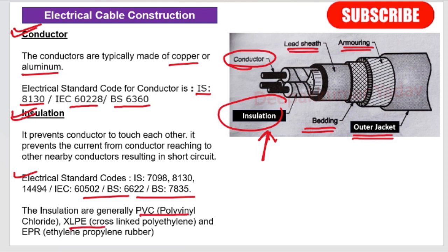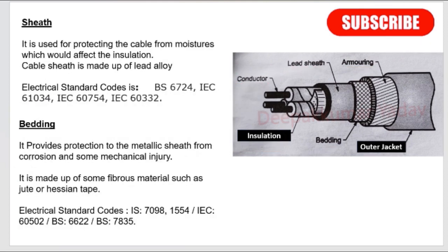The insulation materials are generally PVC (polyvinyl chloride), XLPE (cross-linked polyethylene), and EPR (ethylene propylene rubber). After the insulation, the next protective layer is the sheath. It is used to protect the cable from moisture, which would affect the insulation. The metal sheath is made of lead alloy. Electrical standard codes are BS 6724, IEC 61034, IEC 60754, and IEC 60332.